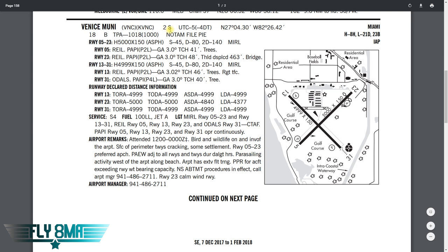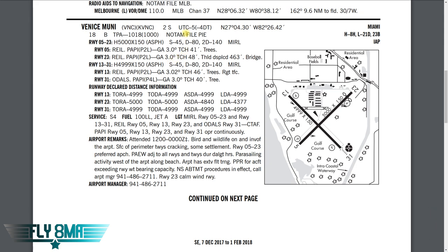2S means it's two miles south of the city it's associated with — in this case Venice. UTC minus five means it's five hours behind GMT, Greenwich Mean Time, so five hours behind Zulu. If it's 1200 Zulu, it's 0700 in Venice. During daylight savings time it's just minus four, so it'd be 0800 in Venice if it were 1200 in GMT.